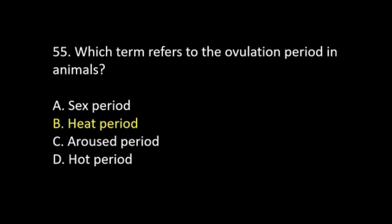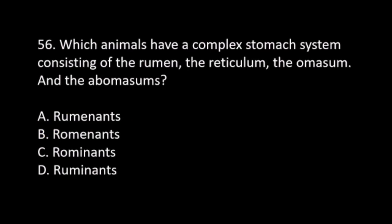Number 56. Which animals have a complex stomach system consisting of the rumen, the reticulum, the omasum, and the abomasum? A. Ruminants. B. Ruminants. C. Ruminants. D. Ruminants.